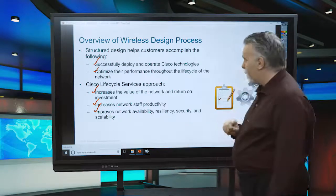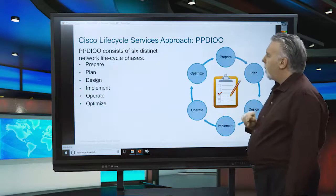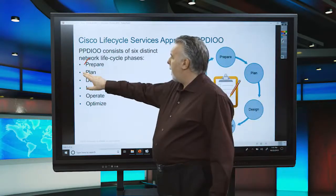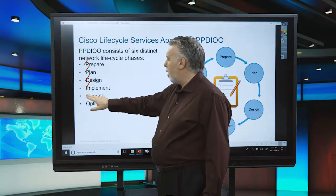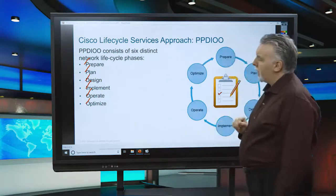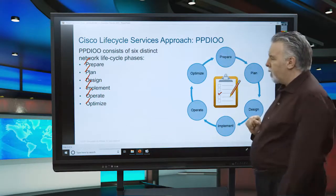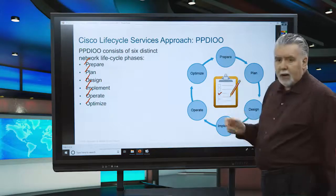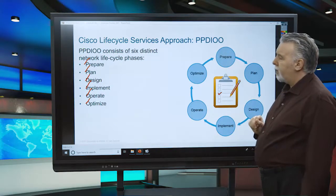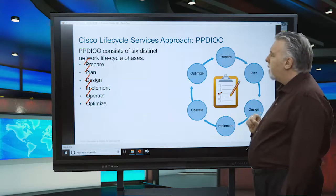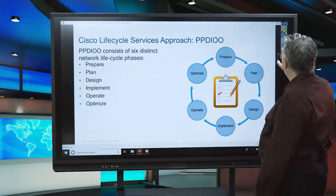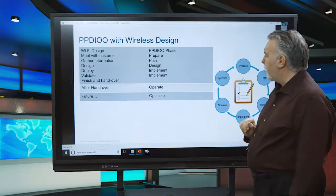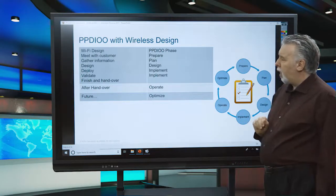We're going to be using the PPDIOO — Prepare, Plan, Design, Implement, Operate, and Optimize — lifecycle model. This was developed by Cisco a long time ago and it can be used on wireless networks, wired networks, wide area networks — it can be used on any of the networking topologies you need to build. We're going to be focused on this methodology in the wireless network world, using it as a template to talk about the different stages of the PPDIOO with wireless design.